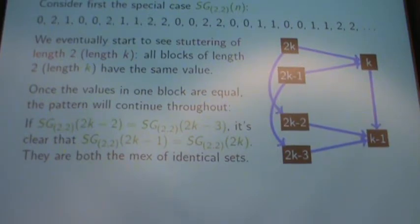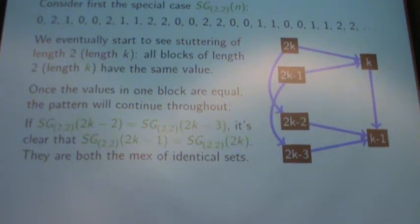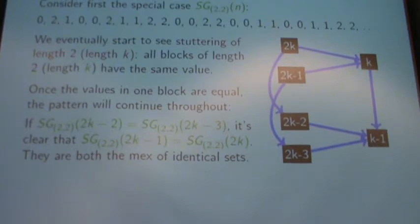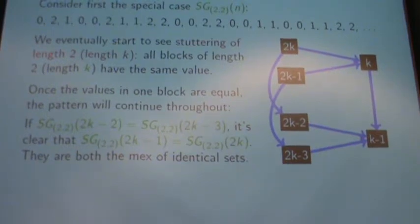You can see this block 2K and 2K-1. If 2K-2 and 2K-3 have the same Sprague-Grundy value, and K just has a single Sprague-Grundy value, then 2K and 2K-1 — their Sprague-Grundy values are going to be the mex over identical sets. So if 2K-2 and 2K-3 have the same value, 2K and 2K-1 are going to have to have the same value. This is like giving the inductive step without the base case: once it happens once, it's going to persist.